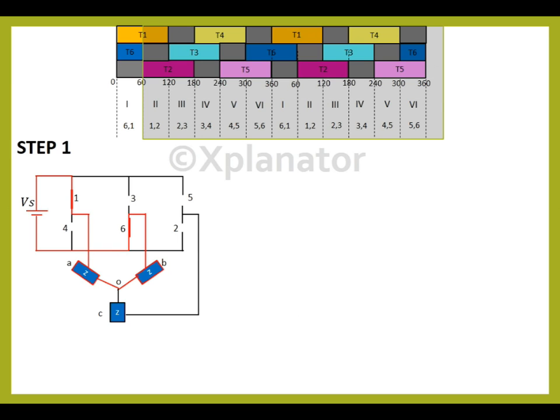In step 1, thyristors 6 and 1 are conducting. So, close these two switches. Now, draw an equivalent circuit. The DC supply has a positive terminal and a negative terminal. It is seen that terminal A is connected to the positive bus, terminal B is connected to the negative bus, while terminal C remains unconnected. The terminal O is in common.